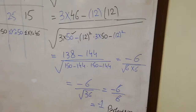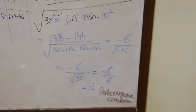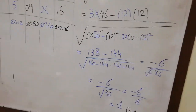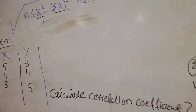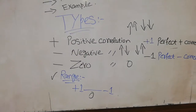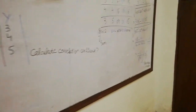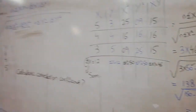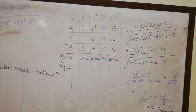After solving, the answer comes out to minus one, which is called perfect negative correlation. This makes sense because X data is 5, 4, 3 (decreasing) and Y data is 3, 4, 5 (increasing) — they move in opposite directions, giving minus one. I hope you understand the basic concept of correlation. If you have any questions, you can contact me. Thank you very much.